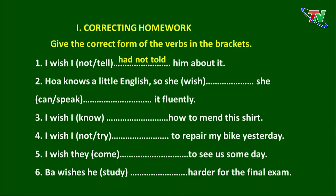Câu số 2: Hoa knows a little English, so she wish she can speak it fluently. Mệnh đề 'Hoa knows a little English' nằm ở thì hiện tại. Vì đây là mong ước của Hoa, động từ 'wish' chúng ta thêm 'es'. Bởi vì bạn ấy mong ước có thể nói tốt tiếng Anh trong tương lai, 'can' chúng ta sẽ chuyển xuống thành 'could' và động từ 'speak' để nguyên. Đáp án: Hoa knows a little English, so she wishes she could speak it fluently.